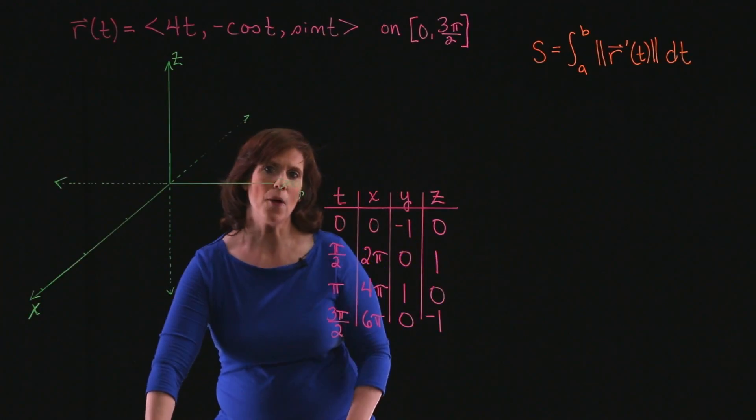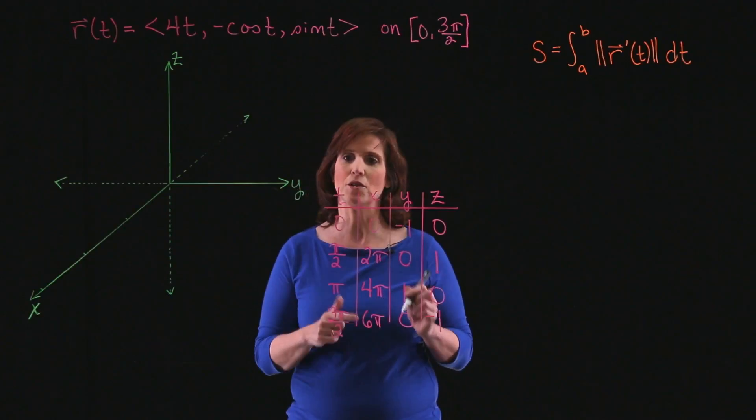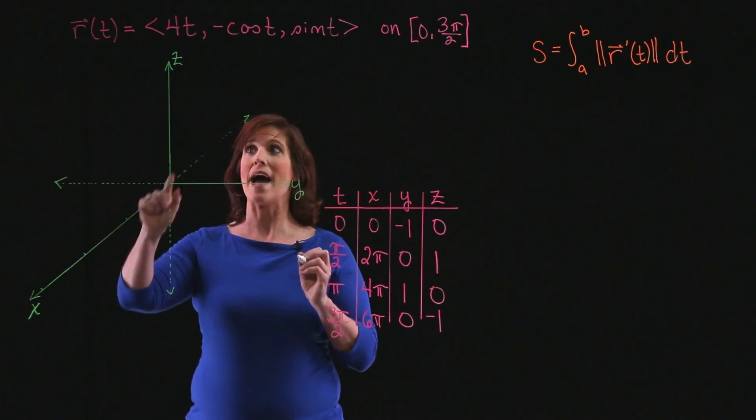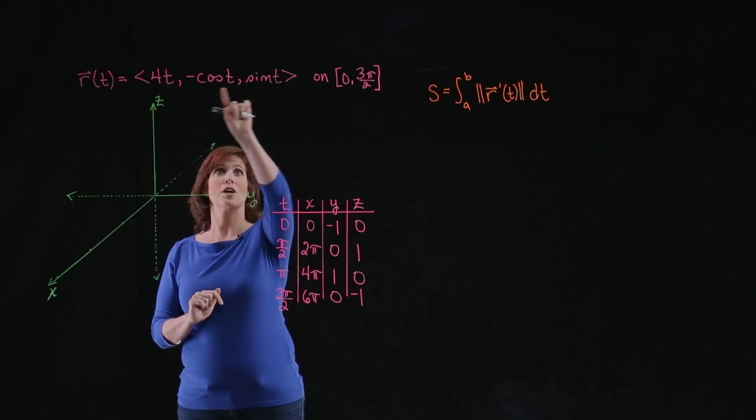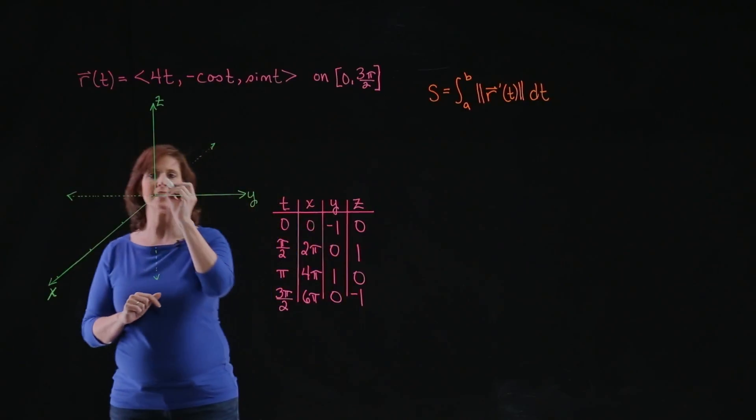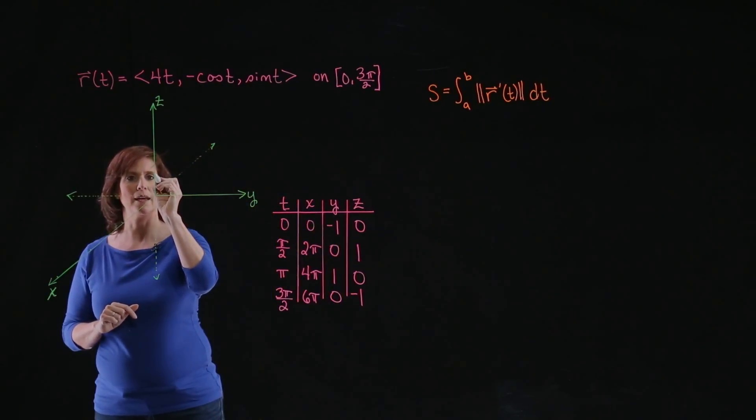I can go ahead and plot these points, but before I do that, I want you to notice something. If I'm looking strictly in the y-z plane, I've got -cos(t), sin(t). That's going to give me a unit circle. So I'm going to just sketch in a unit circle here to help me get an idea of what this graph looks like.